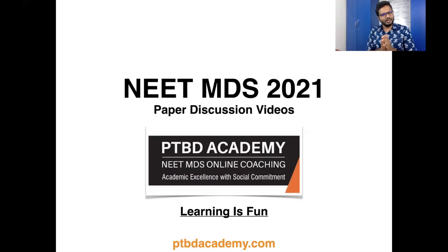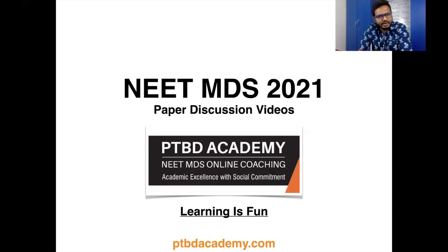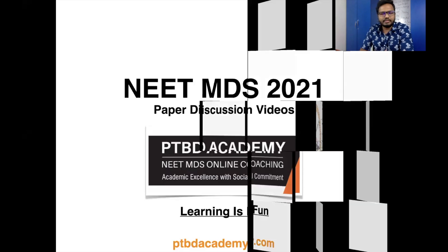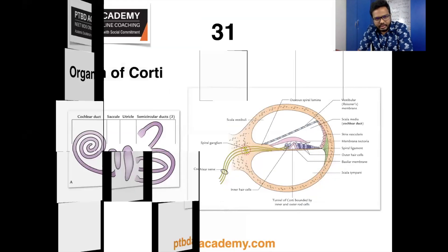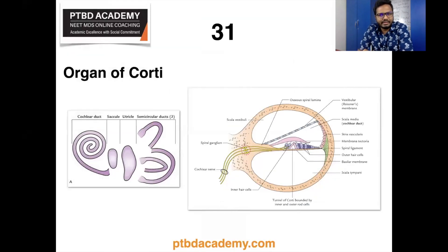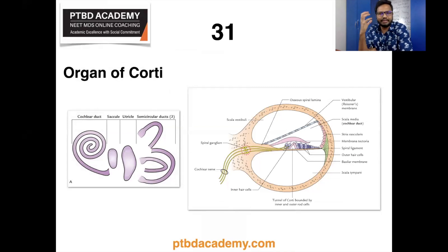Hi, hope you guys are all doing good. Let's move on to our fourth part of the paper discussion video series. The first topic in this video is the organ of Corti — where is it located? Scala media. As you know, we have the external ear, middle ear, and internal ear.